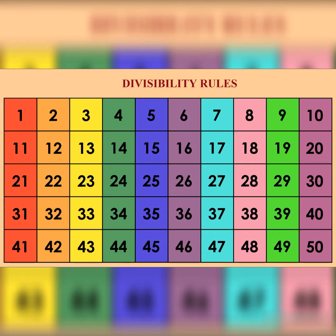Divisibility by 11 – a number is divisible by 11 if the difference between the sum of digits in the odd places and the sum of digits in the even places is a multiple of 11 or 0.